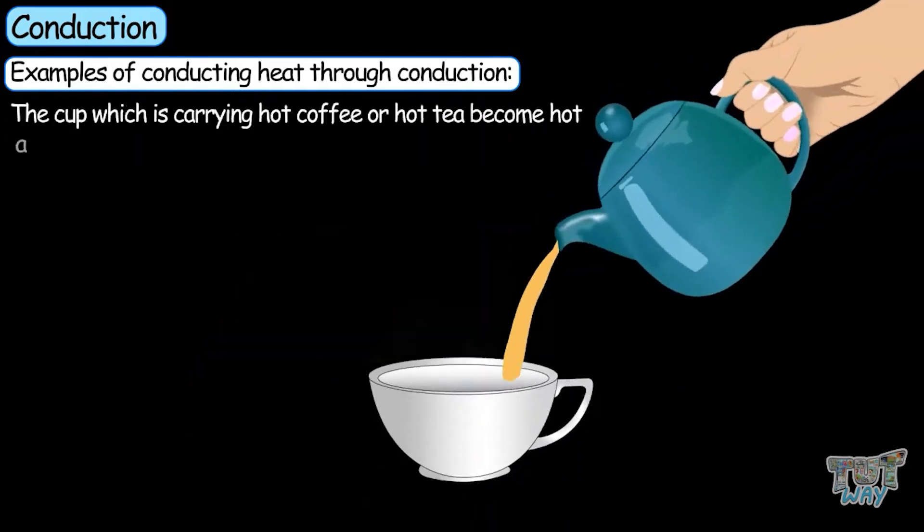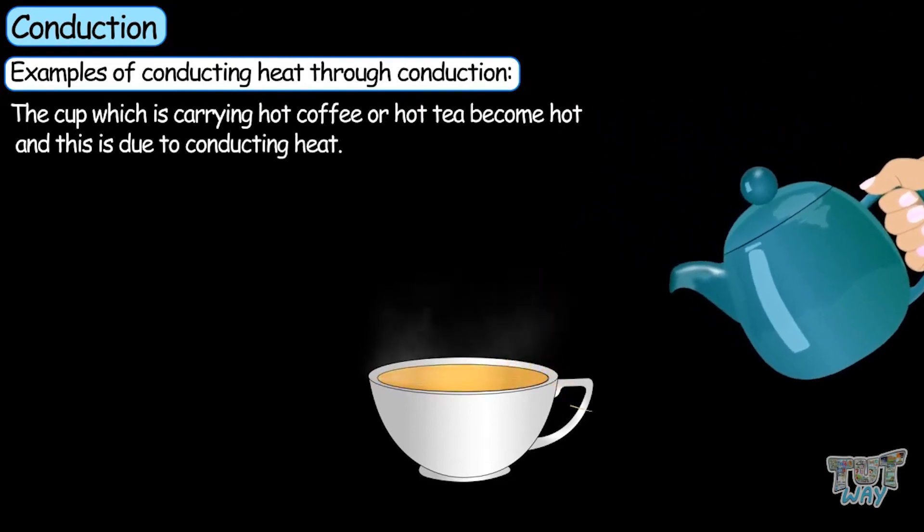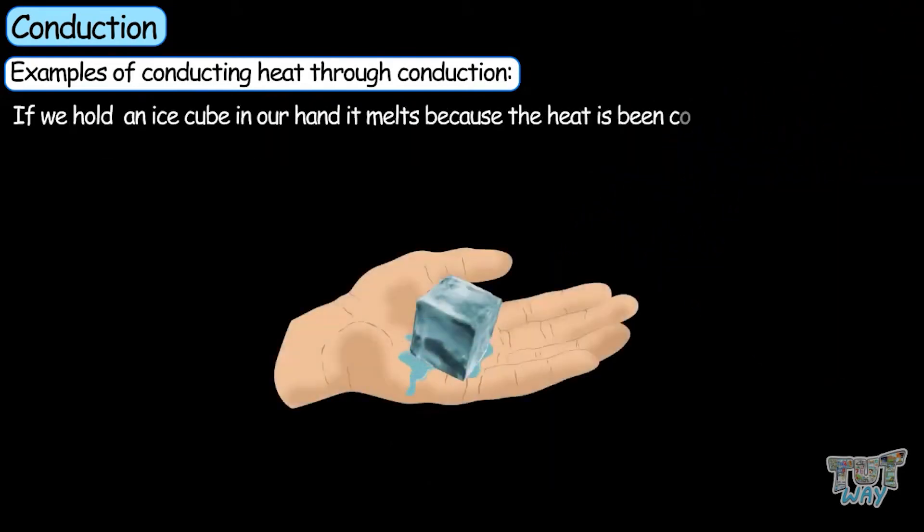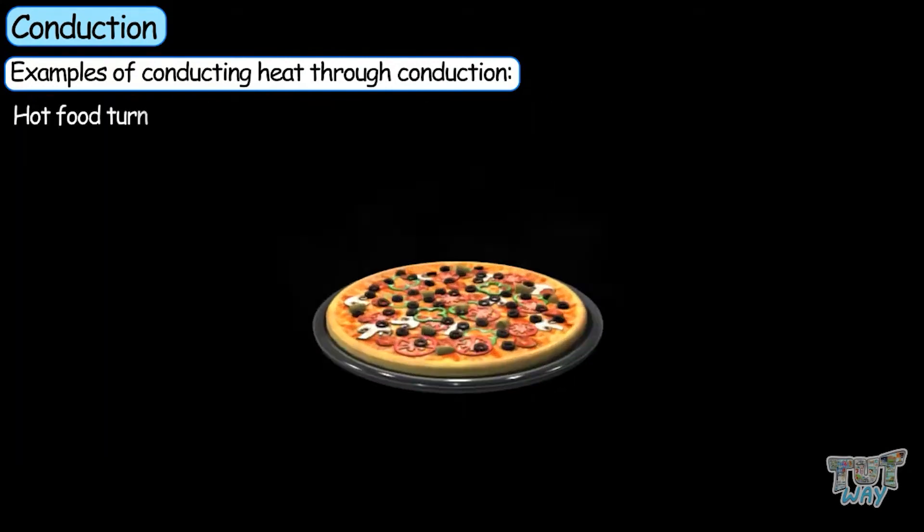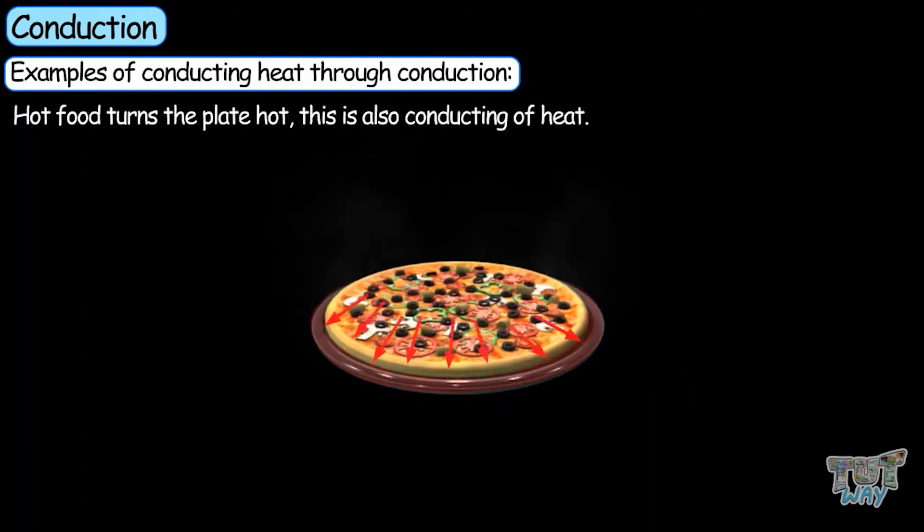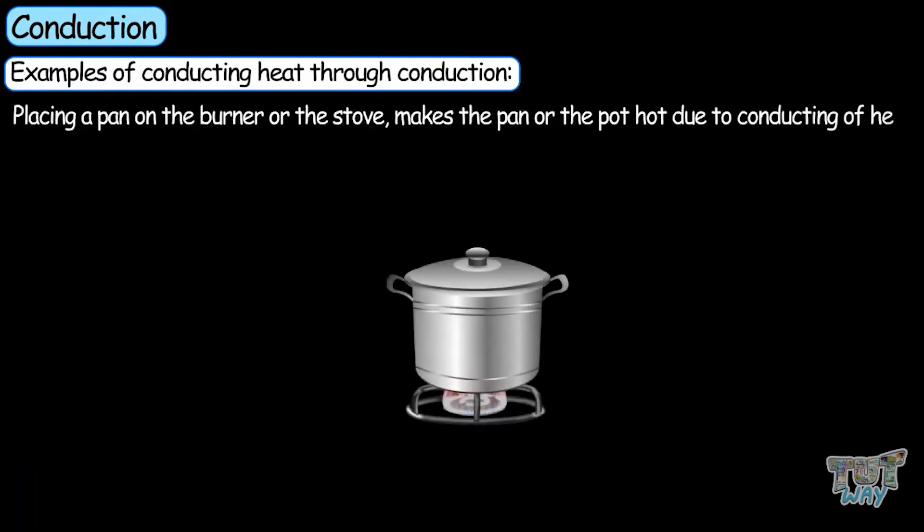The cup which is carrying hot coffee or hot tea becomes hot due to conducting heat. If we hold an ice cube in our hand, it melts because the heat is being conducted from our hand to the ice cube. Hot food turns the plate hot. Placing a pan on the burner or stove makes the pan or pot hot due to conducting of heat.